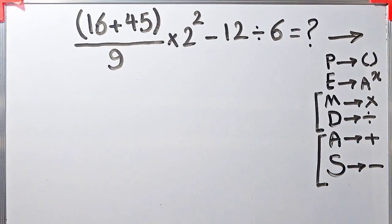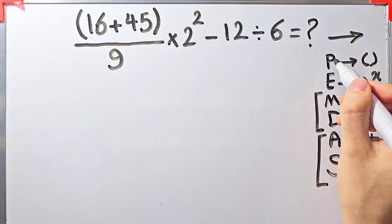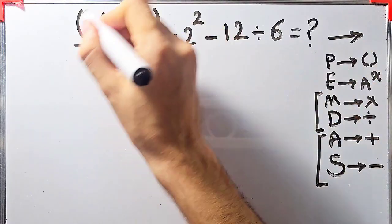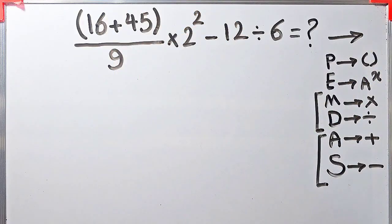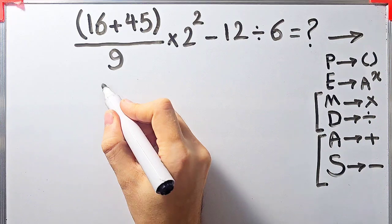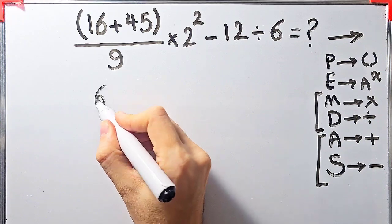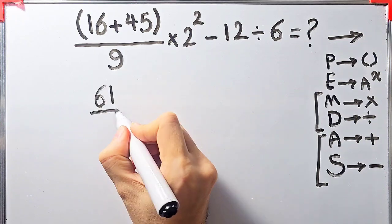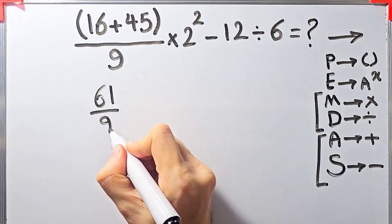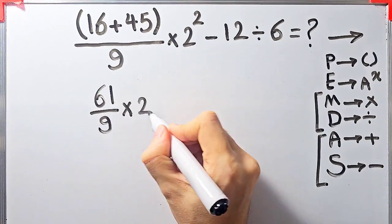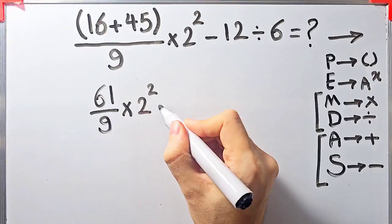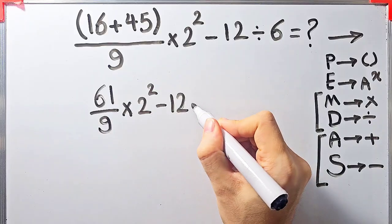According to the PEMDAS rule, in this question first we simplify the parenthesis. We have 16 plus 45; 16 plus 45 equals 61. Now we have 61 over 9 times 2 to the power of 2 minus 12 divided by 6.